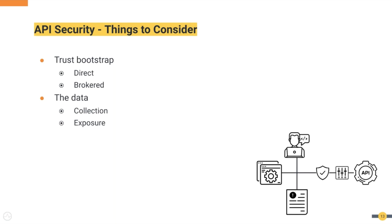The other aspect to consider is how trust bootstrap should be done. It can be direct — where the user authenticates directly with the API and the API knows how to authenticate the user. The simplest example would be authenticating with a username and password. Trust can also be brokered, where the API itself does not trust each individual user, but rather trusts credentials issued by a third party. Examples like logging in with Facebook or Google can be categorized as brokered trust bootstrap.